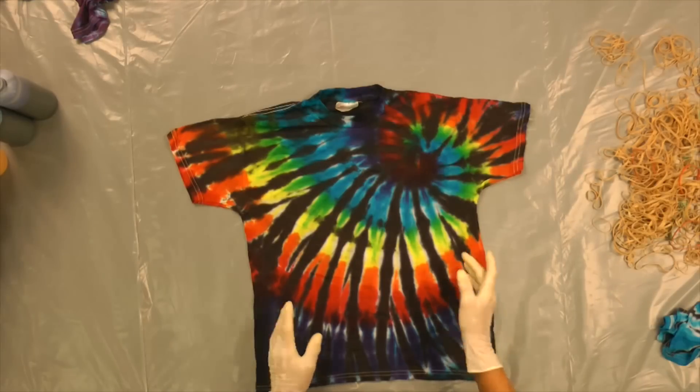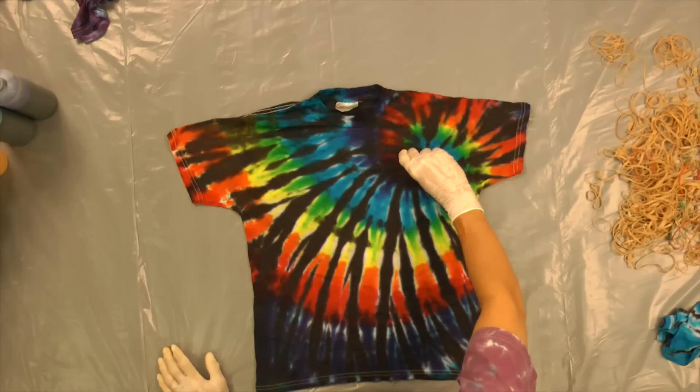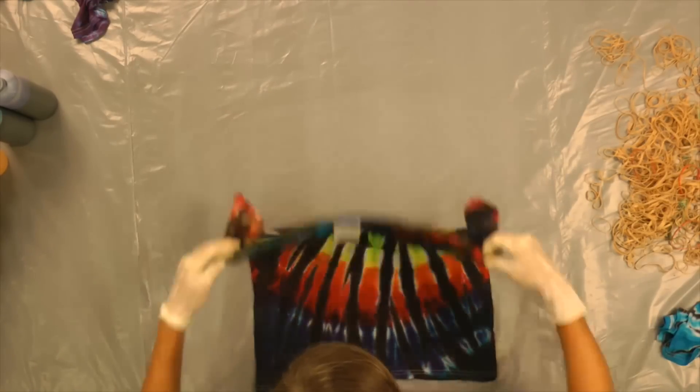This is a rainbow spiral, made very much like the other rainbow spiral, except that our starting point is on the shoulder. And it's twisted the same way, and I'll get back to this shirt. I want to show you a couple others first.